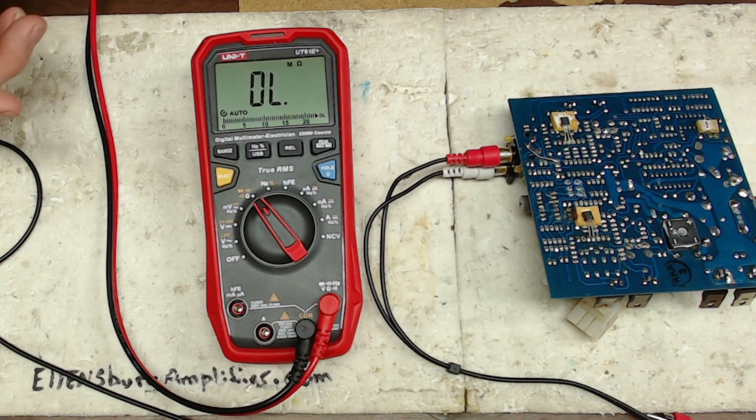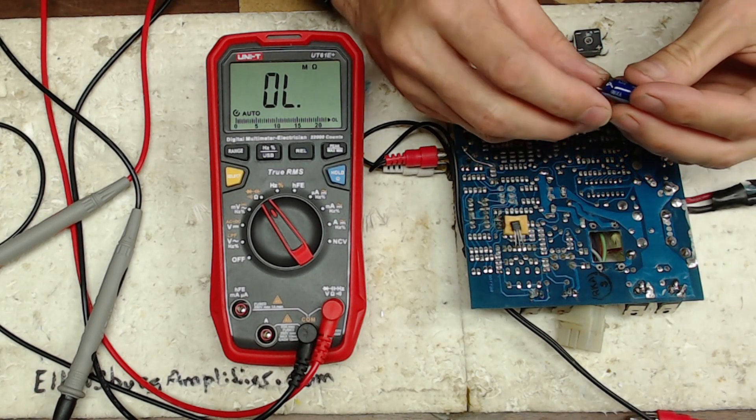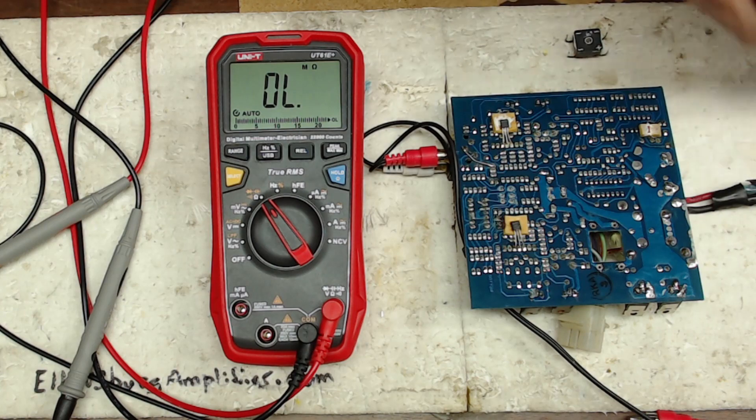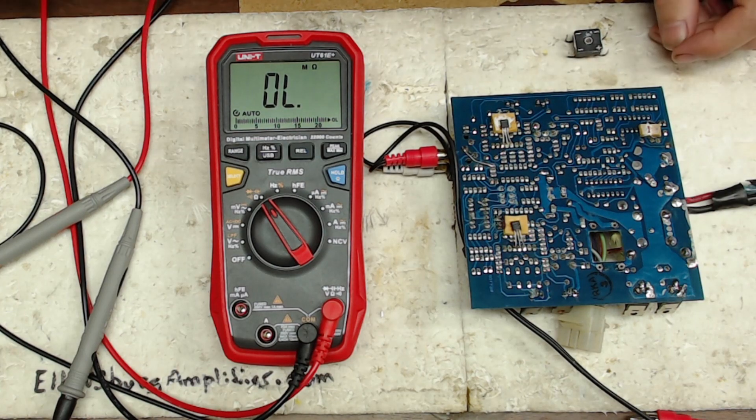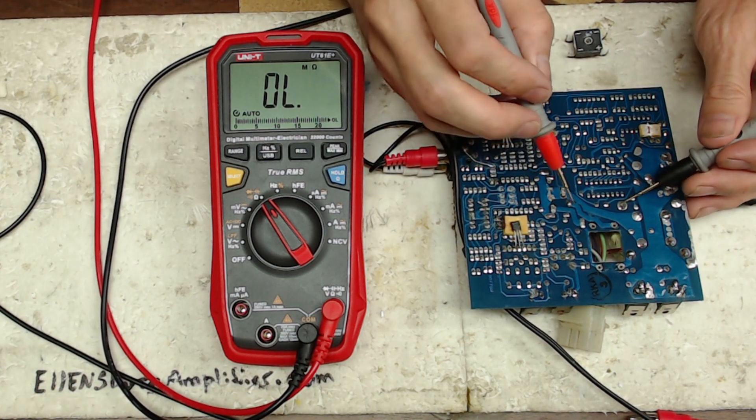All right, so I removed the two rail capacitors and I was still showing a 10 ohm short between the secondary common and the negative rail.